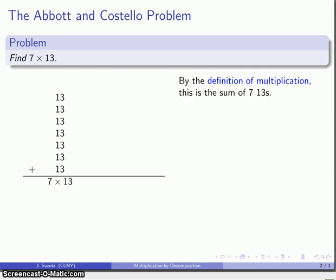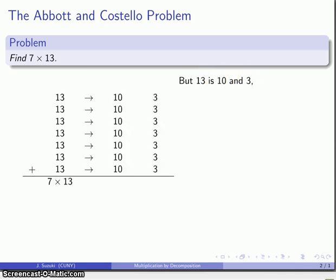In any case, our beginning is that this product 7 times 13 is equal to the sum of 7 thirteens. So here I put down 7 thirteens and whatever this sum is is going to be equal to the product. Now what I can do is I can decompose each of these 13s into a 10 and a 3. So I'll go ahead and do that and each one of those 13s is a 10 and a 3.